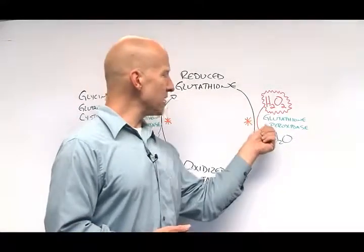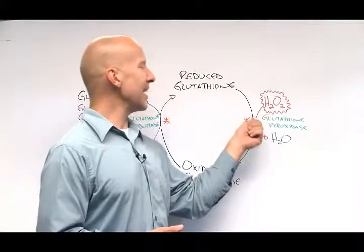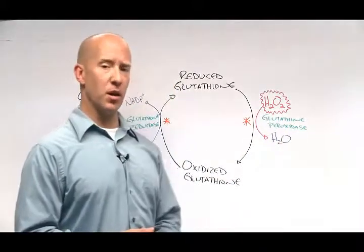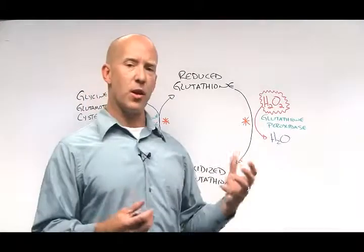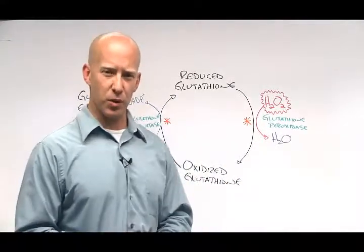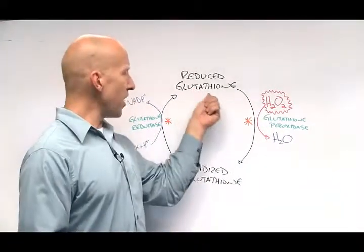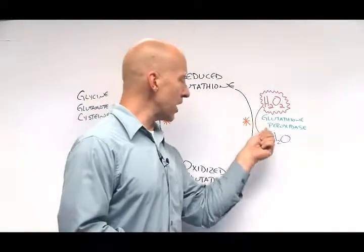Reduced glutathione, in the presence of this glutathione peroxidase, can actually take that extra oxygen molecule and basically spare us from it, protecting us from the otherwise damaging effects of that oxygen molecule. However, reduced glutathione, to actually do that, needs glutathione peroxidase.